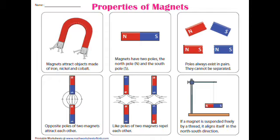The repulsive property: like poles repel and unlike poles attract. If a magnet is suspended freely by a thread, it aligns itself in the north-south direction. This demonstrates the directional property — magnets always have a directional property.